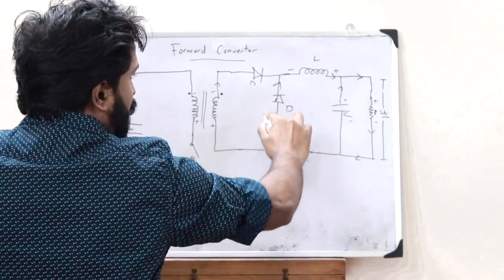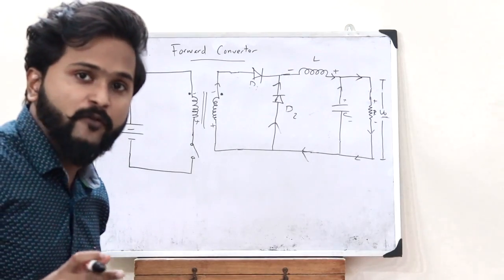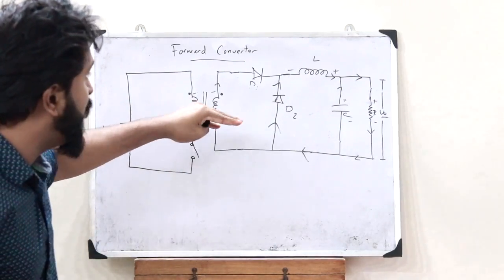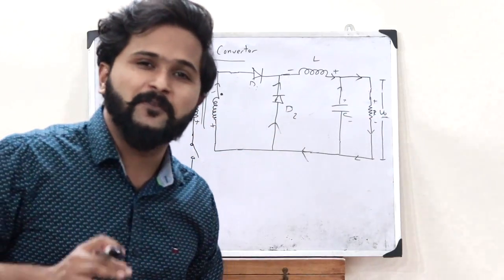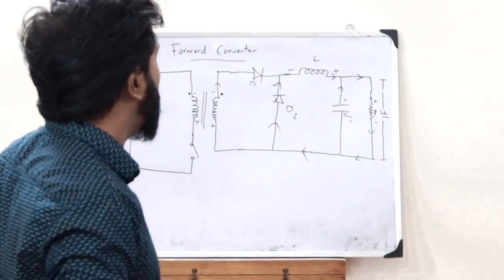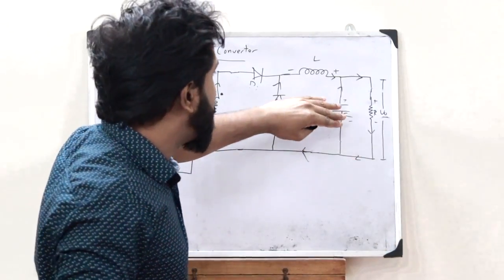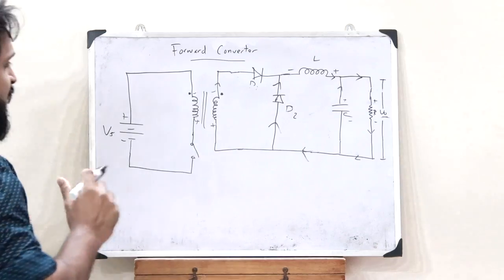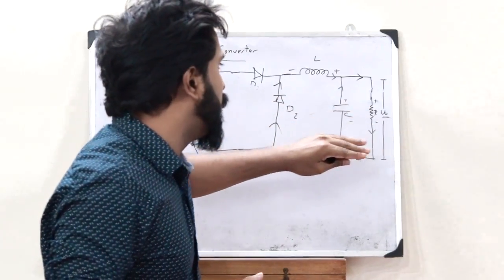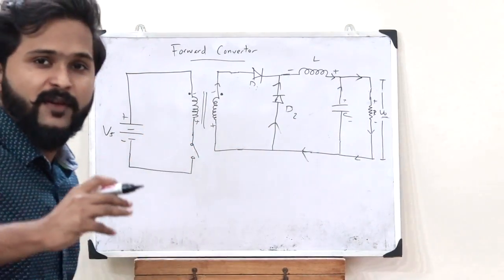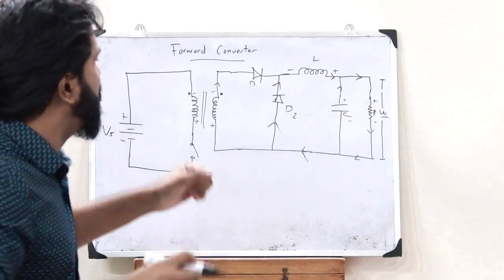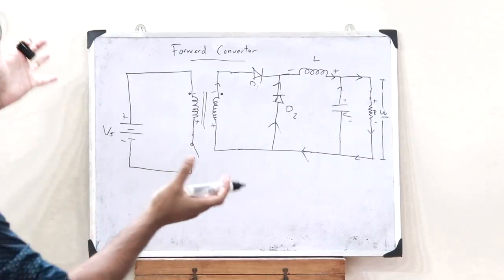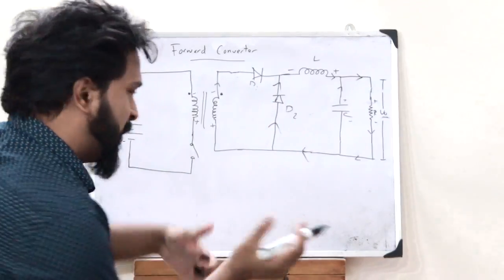So what we observe is that when the switch is both ON and OFF, a particular output voltage is obtained across the load, and the polarity doesn't change. Whatever polarity we had at the voltage source, the same polarity is obtained at the output for both switch-on and switch-off conditions. This is the basic working of what we refer to as a forward converter.